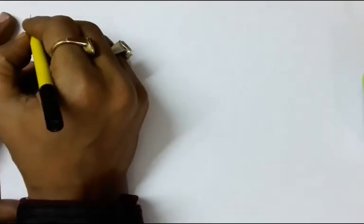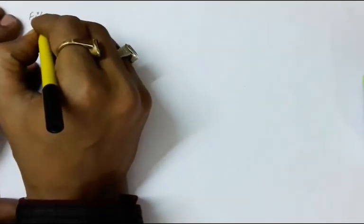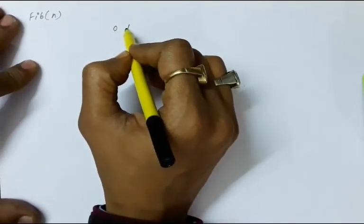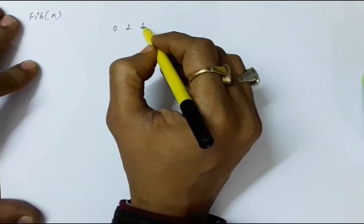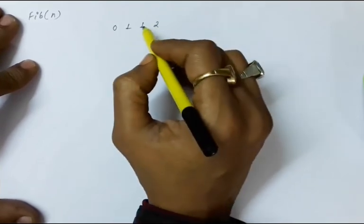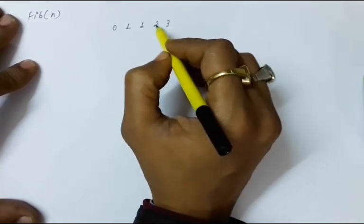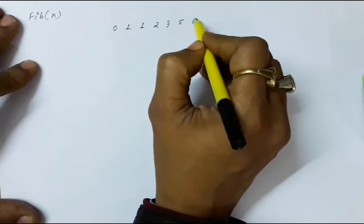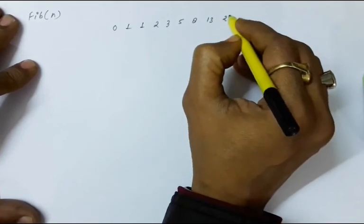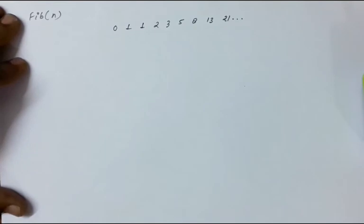Now let us take another example — finding the Fibonacci number and the Fibonacci series. In the Fibonacci series, the first term is 0, the next is 1, and each subsequent term is the sum of the previous two terms: 0, 1, 1, 2, 3, 5, 8, 13, 21, and so on.